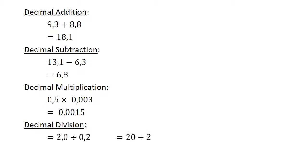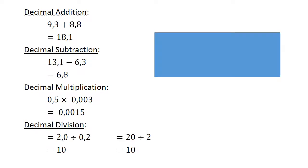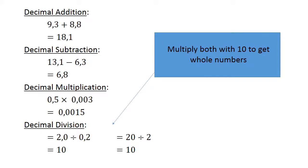Decimal division. 2.0 divided by 0.2. We multiply both by 10 to get whole numbers. 20 divided by 2 equals 10.